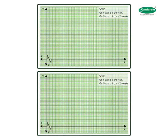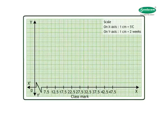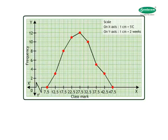We take a scale of 1 cm equal to 5 degrees Celsius on the x-axis and 1 cm equal to 2 weeks on the y-axis. We take class marks on the x-axis and frequencies on the y-axis. Now we plot the points, including the additional points with class marks 7.5 and 47.5 with frequency 0.